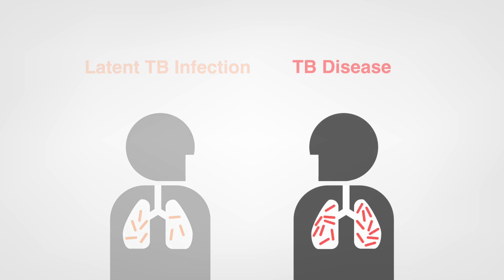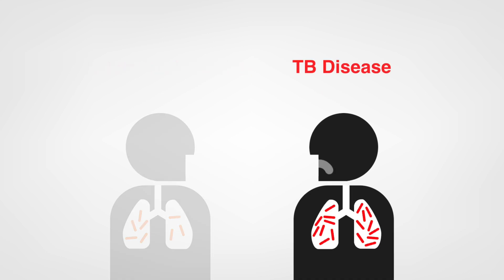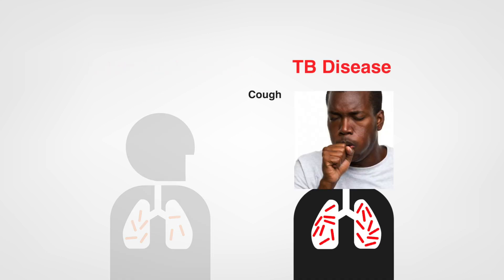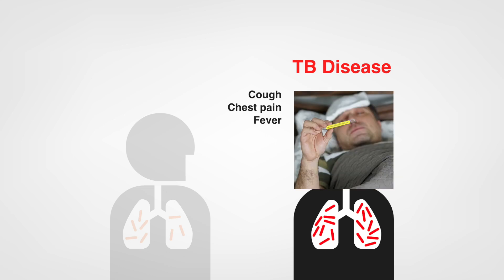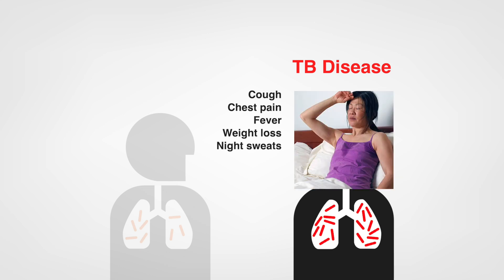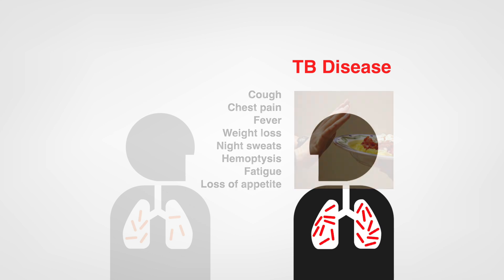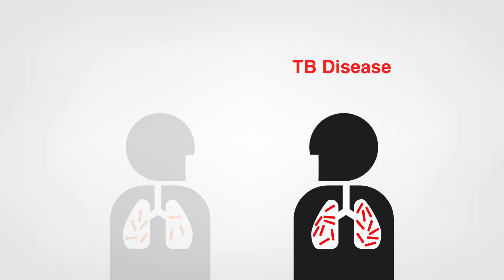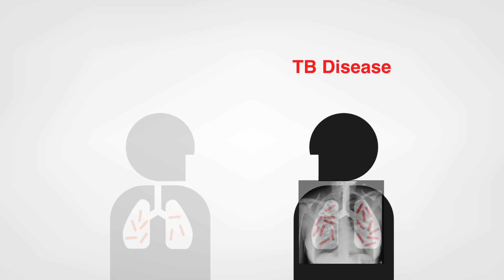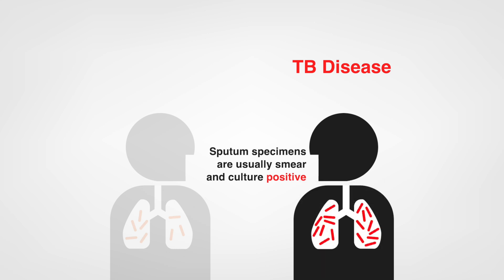Someone with TB disease usually does have some or all of the common TB symptoms, which may include cough, chest pain, fever, weight loss, night sweats, hemoptysis, fatigue, and loss of appetite. The test for TB infection may be positive in a person with TB disease, and the chest radiograph is usually abnormal in someone with pulmonary TB disease. Sputum specimens are usually smear and culture positive in people with pulmonary TB disease, but they may be negative.